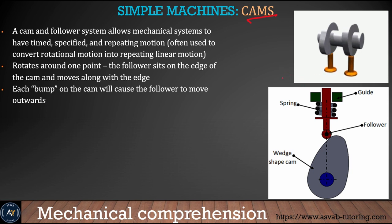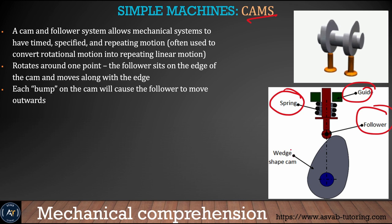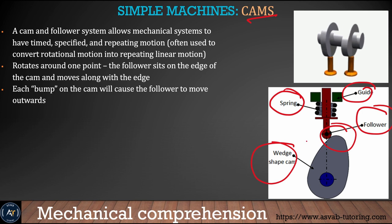Next we learn about cams. A cam gives you repeated motion. A cam and follower system allows a mechanical system to have time-specific and repeated motion. The parts of a cam system are the spring, guide, follower, and wedge. If you have a single lobe it gives one repeated motion; two lobes give two repeated motions.